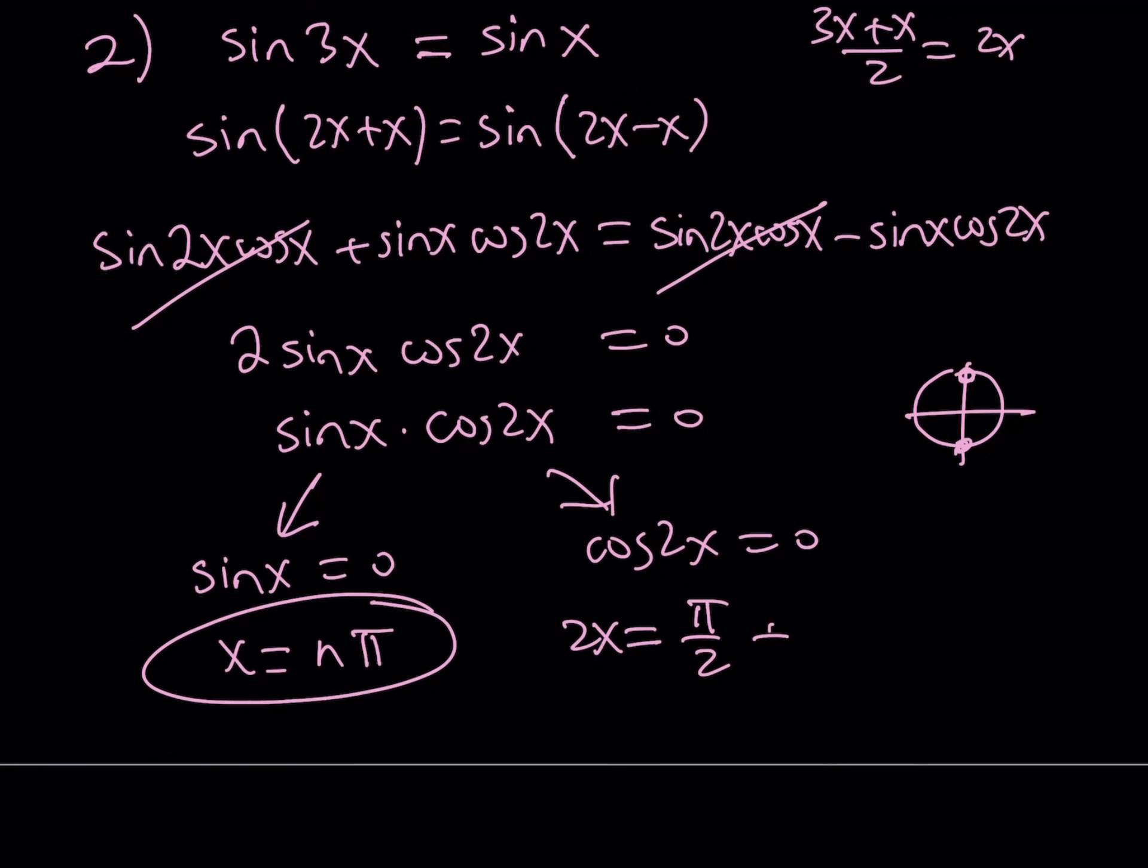So, we can say that pi over 2 plus, of course, 2n pi, and divide both sides by 2, and you're going to get this one. So, that's going to give us a set of solutions.